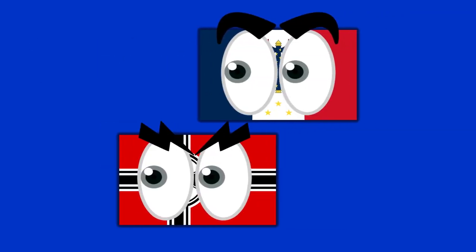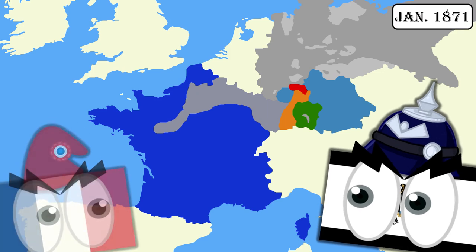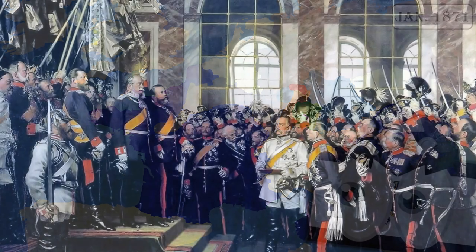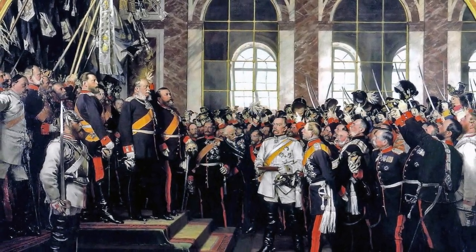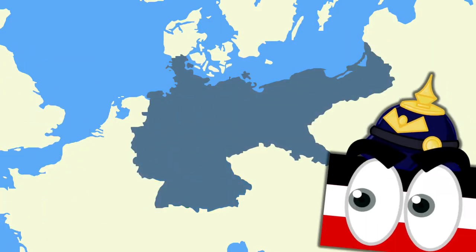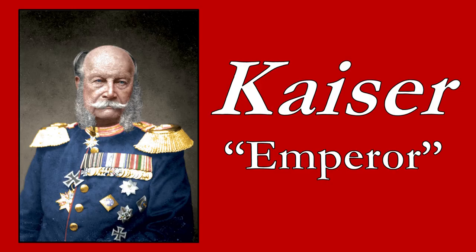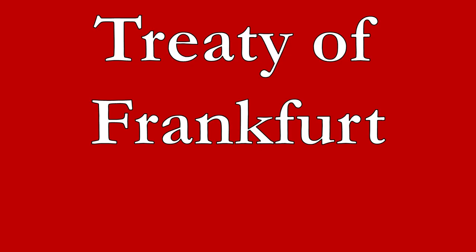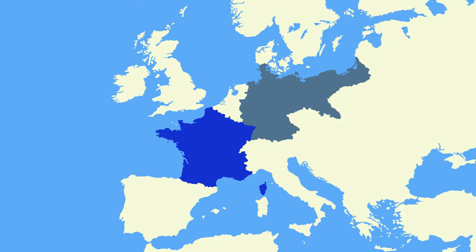They then set about defending Paris, which would eventually fall to the advancing Germans in January 1871 — the same month that the various princes of Germany met in the Palace of Versailles and proclaimed a united German Empire, with Prussia's Wilhelm I as Kaiser. Bismarck remained chancellor for another 19 years. The Treaty of Frankfurt officially ended the war, and saw the border region of Alsace-Lorraine become German territory.